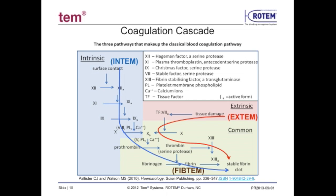One of the modified base tests is the FibTem. This test is extrinsically activated but blocks the platelet contribution to the clot, and therefore directly measures only the fibrin contribution to clot formation and indirectly measures fibrinogen availability.